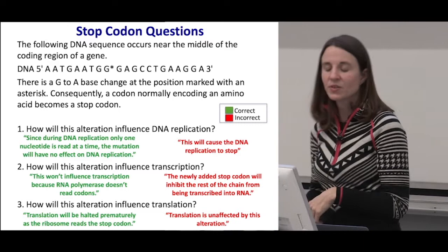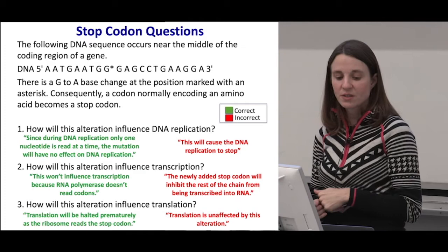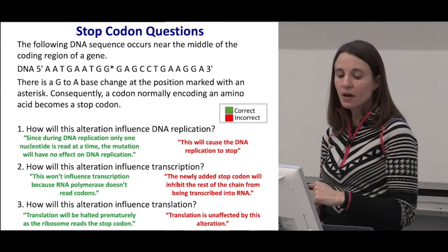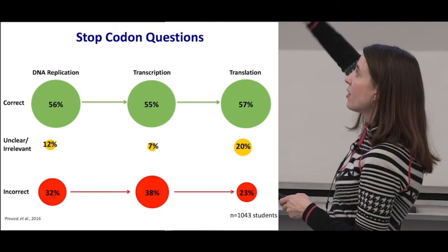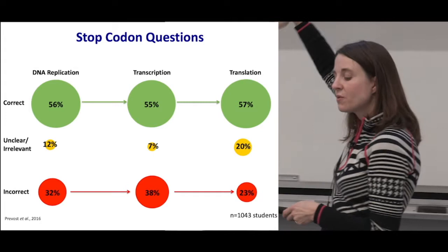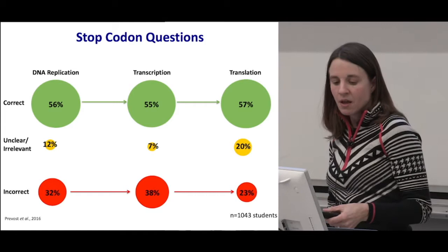Looking across all of these questions, we have student percentages in each bubble — green at the top is correct, yellow in the middle is unclear or irrelevant, and incorrect at the bottom. If you look vertically, that adds up to 100%. We could see that only about 50% of our students — at the end of a genetics course — were getting the answers correct to each of these questions.